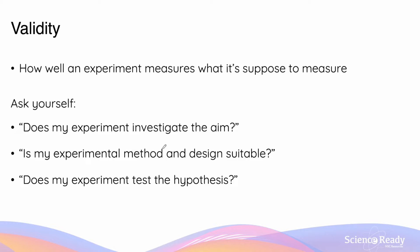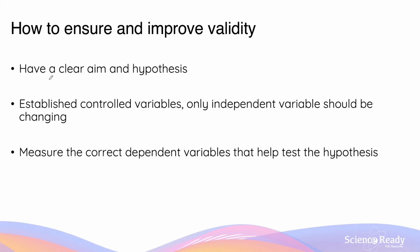If you answer yes to all three questions, then most likely your experiment is valid. To ensure and improve validity, first we need a clear aim and hypothesis — these should be developed before your experimental method. For a method to be valid, you need established controlled variables: the variables and factors you want to maintain and keep the same throughout repetition.